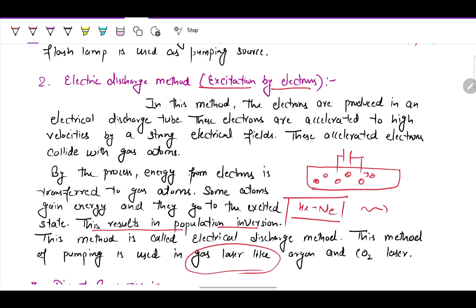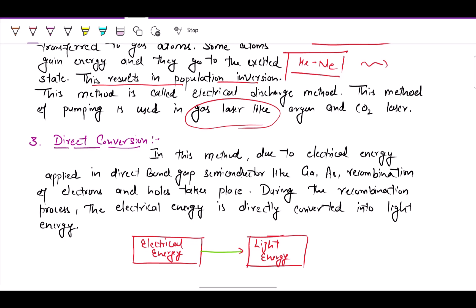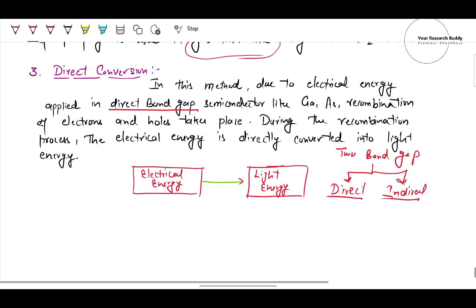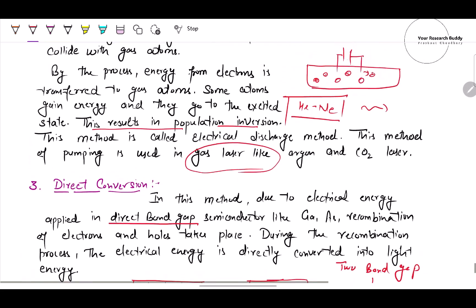The third pumping method is direct conversion, where electrical energy applied to a system is directly converted into light energy, producing the population inversion condition. This method is only applicable to materials with a direct band gap — not indirect band gap materials. During this process, recombination occurs between electron-hole pairs, and this is directly converted into light energy.